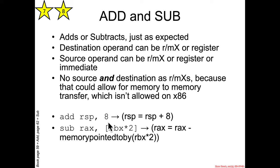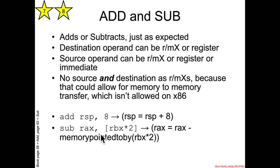In two-operand form, the destination is always on the left. For example, SUB RAX, [RBX*2] is an RMX form that takes RBX, multiplies it by 2, treats it as a memory address, grabs the value from that memory address, subtracts it from RAX, and then puts the result back into RAX.